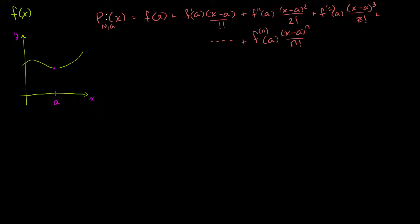This nth degree polynomial centered at a — p of a is going to be equal to f of a. You can verify that because all of these other terms have an (x minus a) in them. So if you put an a in the polynomial, all of those other terms are going to be 0, and you'll have p of a is equal to f of a. It's going to fit the curve better the more of these terms that we actually have.